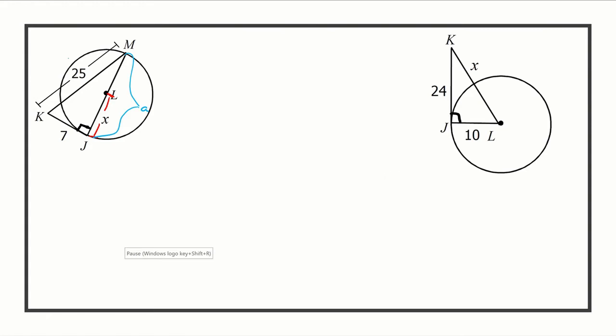This is our c, our hypotenuse, that's our b. Since we're looking for a, it's going to be 25 squared minus 7 squared. 25 squared is 625, 7 squared is 49. 625 minus 49 is 576, and the square root of that gives me 24.